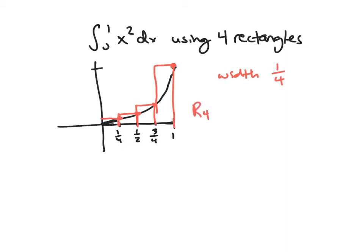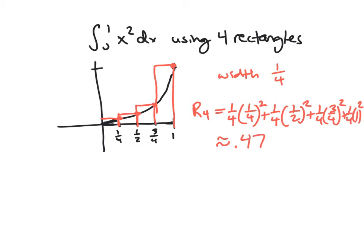And so I have my four rectangles here. And so my right sum, which I'll call R4 here, again, R for right, four for the number of rectangles, is going to be, so I've got my width of the first one times my height, which is I plug it into x squared, so one fourth squared. Again, with one fourth, now I'm plugging in one half. One fourth, plugging in three fourths. And then one fourth, plugging in one. And this turns out to be approximately 0.47, if you mess around on a calculator there.